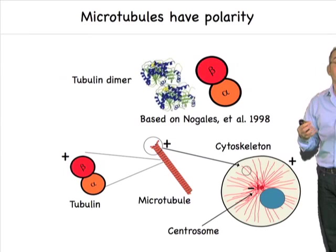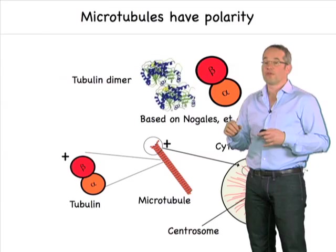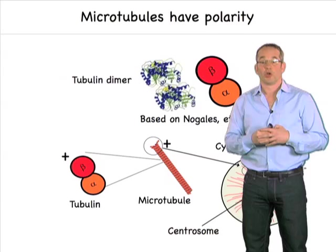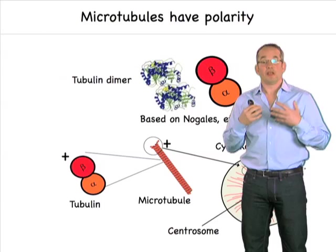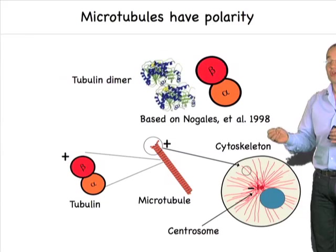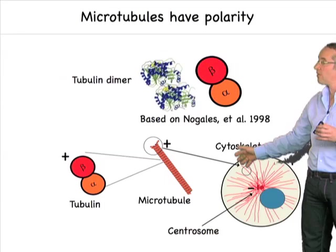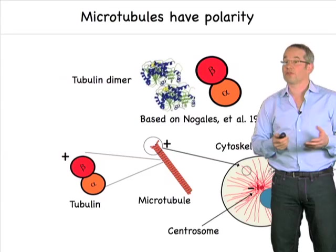The other interesting thing about microtubules is they have polarity. So you have a tubulin dimer, but the dimer is a heterodimer with two different subunits, alpha and beta. Those alpha-beta subunits set up a polarity inside the microtubule with the beta subunit at the plus end. The beta subunit marks the plus end of the microtubule. In the cell, the plus ends tend to be out in the periphery of the cell, and the minus ends are concentrated at the centrosome. So a microtubule will nucleate from the centrosome, grow out through the cell with its plus ends leading. It has dynamics, but it also has polarity.